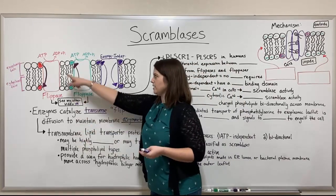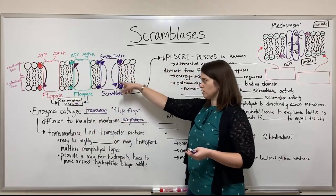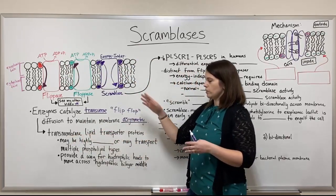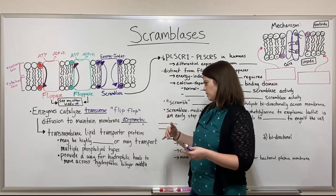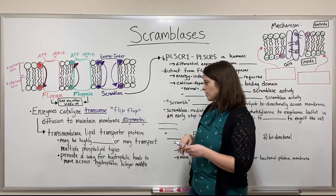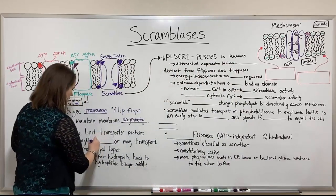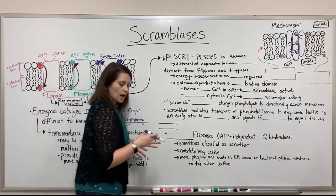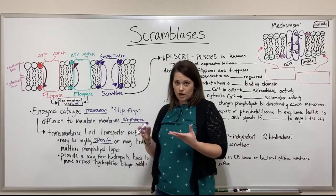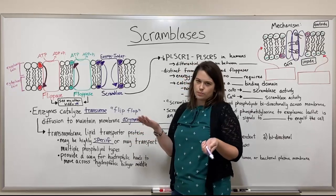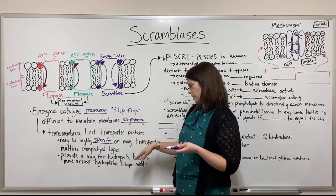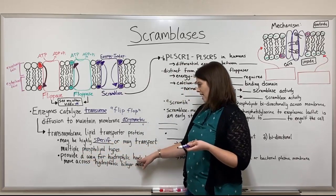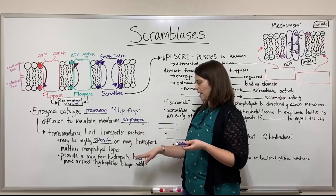These enzymes are transmembrane — the flip-ases, flop-ases, and scramblases all span the membrane, making them transmembrane proteins. They are lipid transporters, transporting phospholipids from one side to another. They may be highly specific, transporting only one kind of phospholipid, or they may transport multiple types depending on which protein you're talking about. Importantly, they provide a way for hydrophilic heads to move across the hydrophobic bilayer middle.